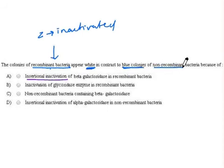So our answer should be option A which says insertional inactivation of beta galactosidase in recombinant bacteria.